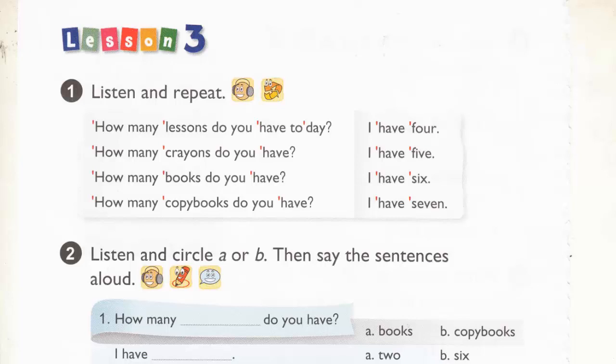Page 44, Lesson 3, Activity 1. Listen and repeat. How many lessons do you have today? I have four. How many crayons do you have? I have five. How many books do you have? I have six. How many copy books do you have? I have seven.